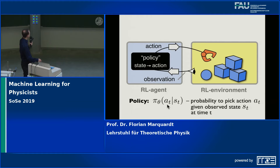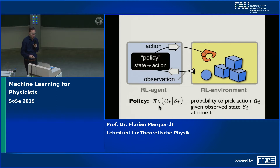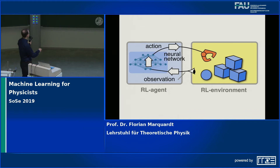Commonly this policy is denoted by pi — pi stands for probability here, not the number pi. It comes with a subscript theta indicating that this policy has been parametrized and you can change the parameters to adapt the policy. In most cases the policy is actually represented by a neural network, so theta is all the parameters of the neural network — the weights and biases. The input of the neural network is the observed state and the output is the probabilities of the various actions. In this example there are three different discrete actions and therefore three output neurons giving us the probabilities for those three actions.